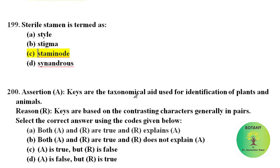Assertion: Taxonomic keys are the taxonomical aid used for identification of plants and animals. Reason: Keys are based on contrasting characters in pairs. Both assertion and reason are correct, and R explains A.